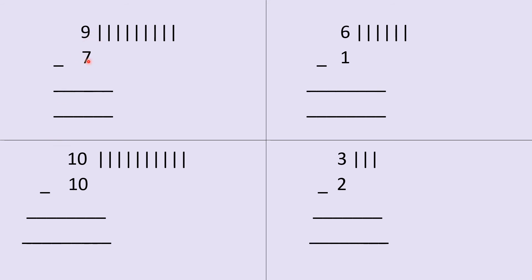This is nine minus seven. Since nine is on top, I have made nine lines — one, two, three, four, five, six, seven, eight, nine. And this is number seven. It means out of nine lines, I have to cut seven lines. So let's cut seven lines: one, two, three, four, five, six, seven. We'll cut all these seven lines and we'll be left with how many lines now? Two. So our answer will be number two.